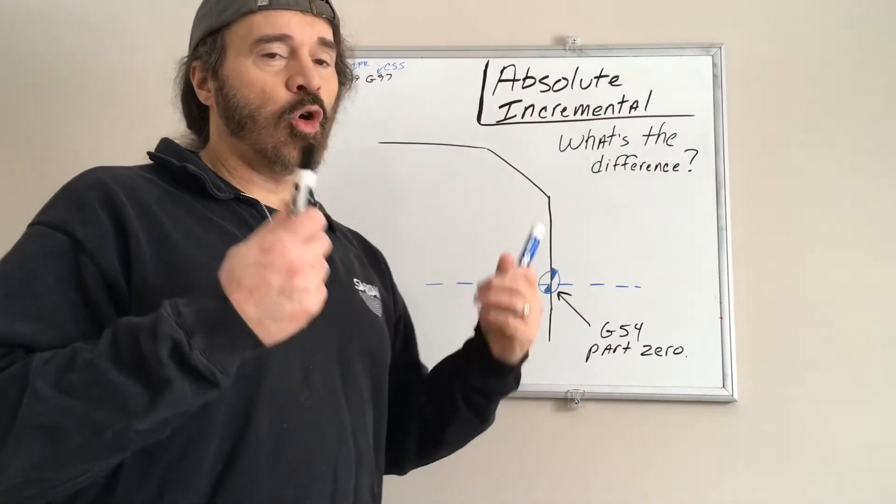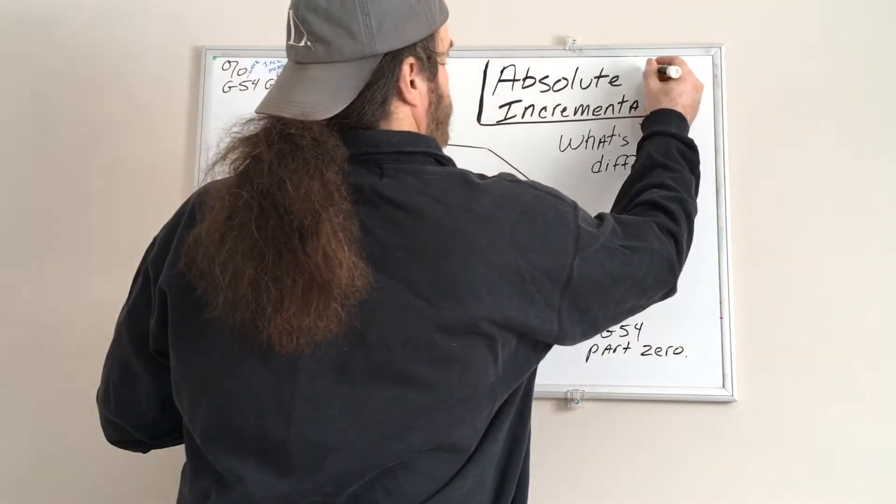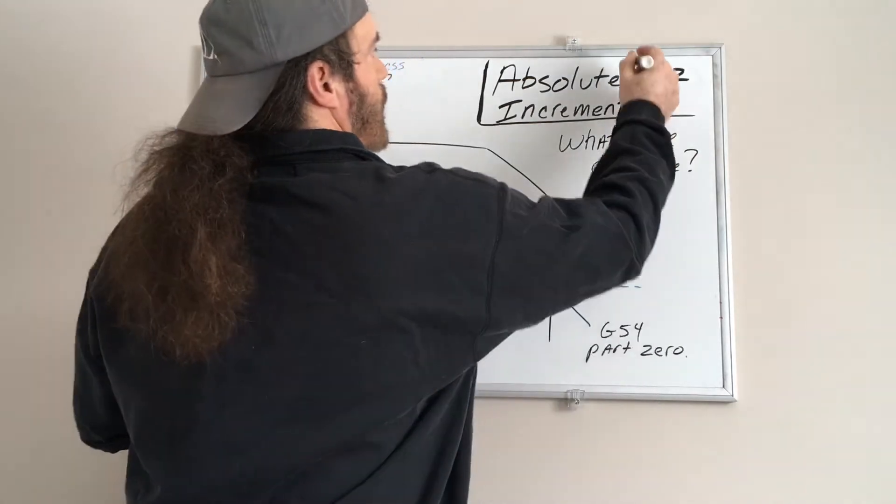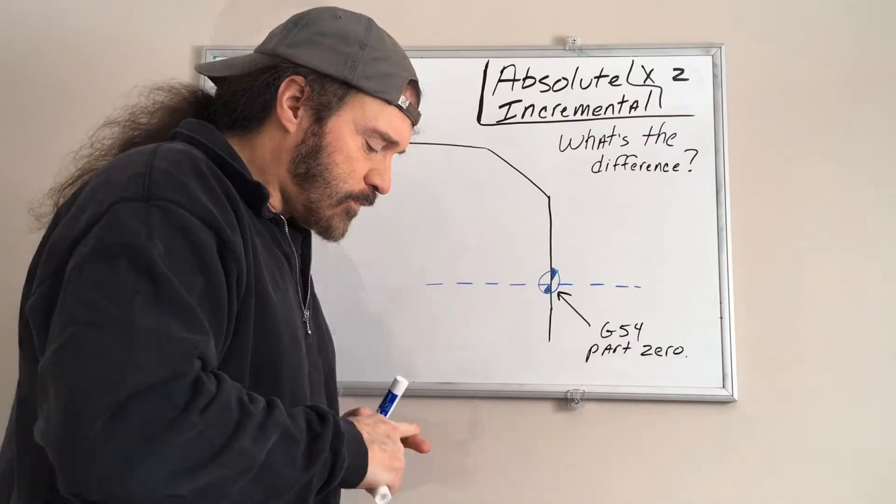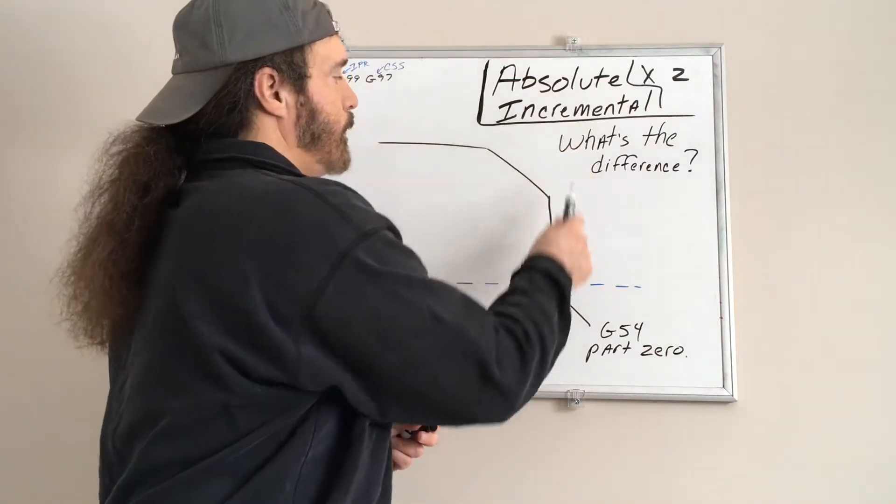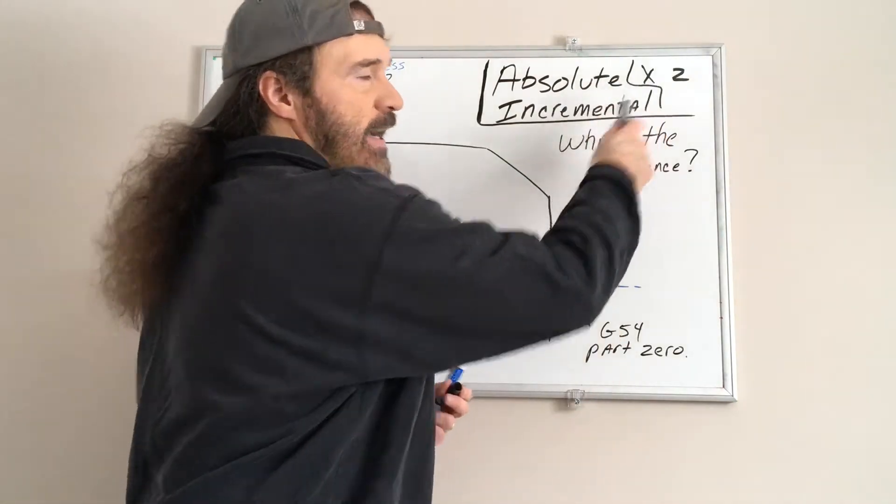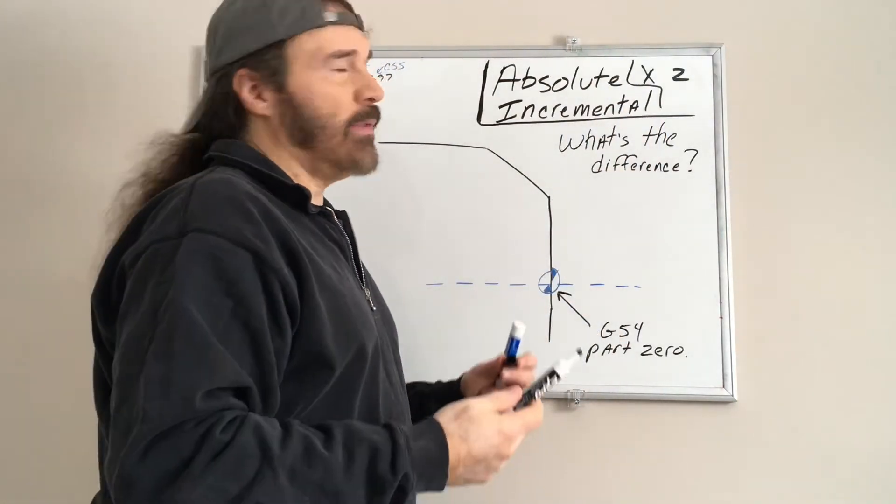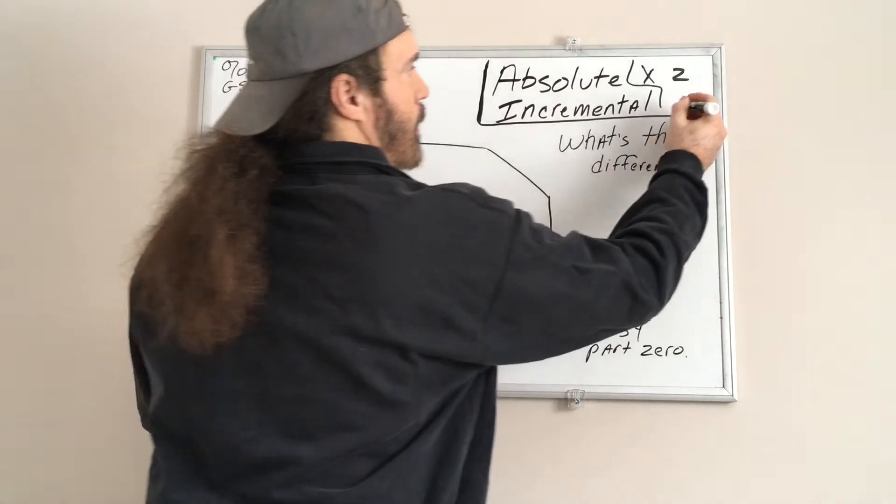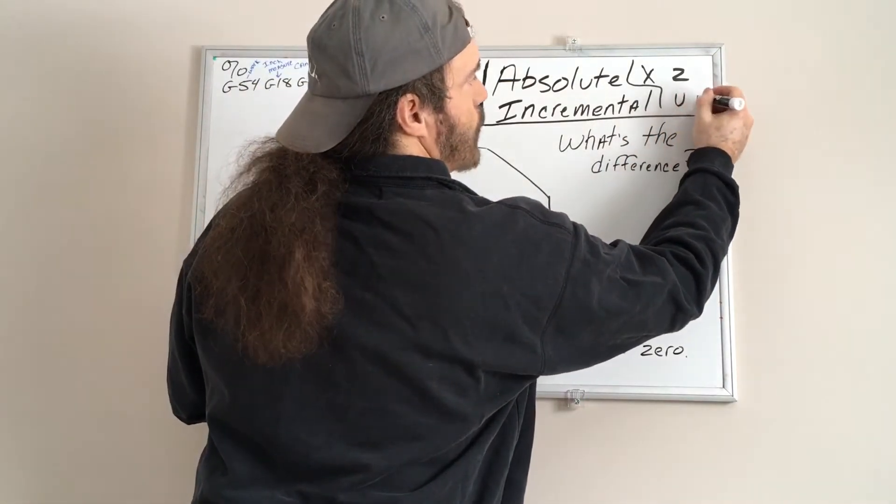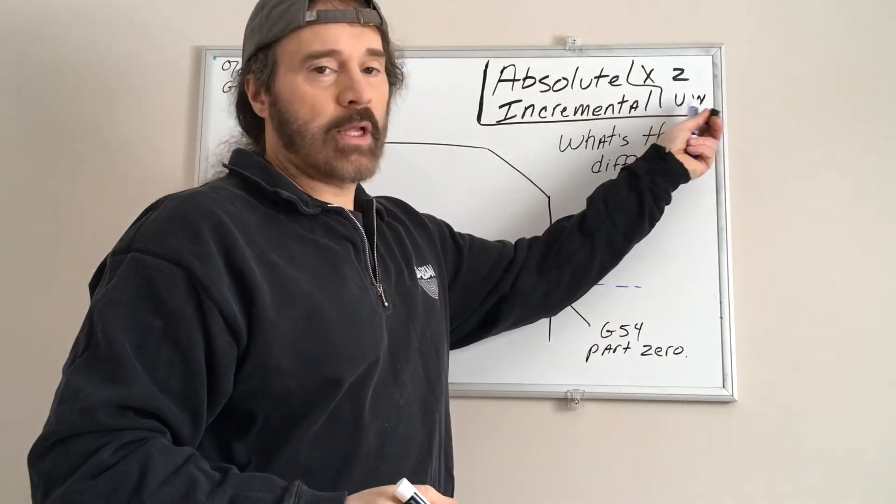Absolute is your X and Z moves. When you're writing a program and you're giving it the coordinates that you want to go and you're using X and Z, that is known as absolute. Incremental is U and W code.